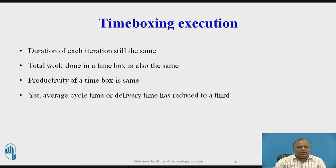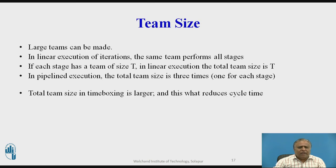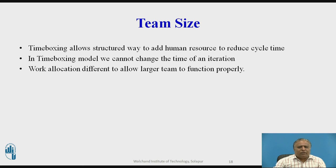Regarding time boxing execution: the duration of each iteration is the same, the total burden in a time box is the same, and the productivity of a time box is the same. Yet the average cycle time or delivery time has been reduced to a third. For team size: in linear execution of iterations, the same team performs all stages. If each stage has a team of size T, then in linear execution the total team size is T, but in pipeline execution the total team size is 3T — one for each stage. This larger team size is what reduces cycle time. Time boxing allows a structured way to add human resources to reduce cycle time.